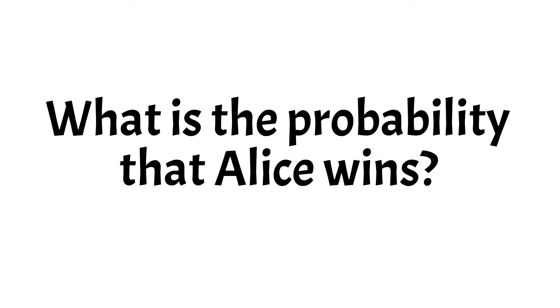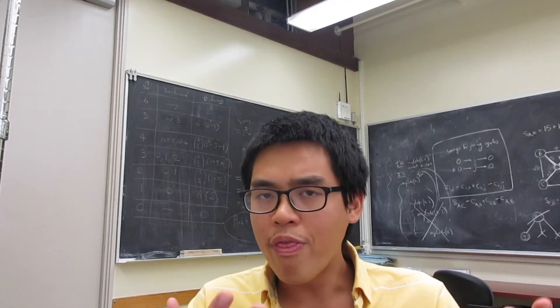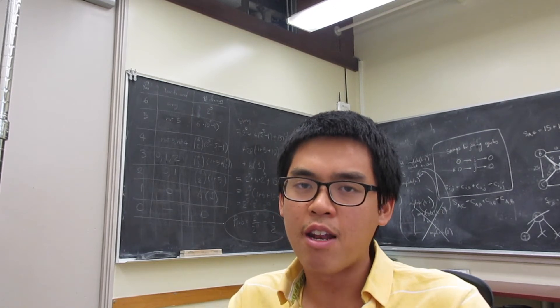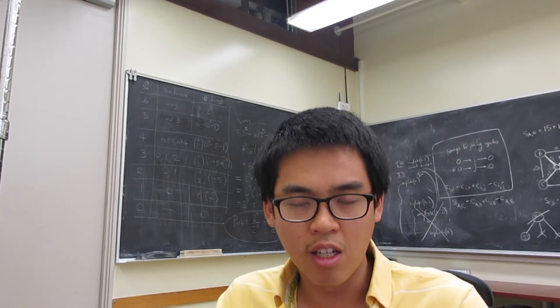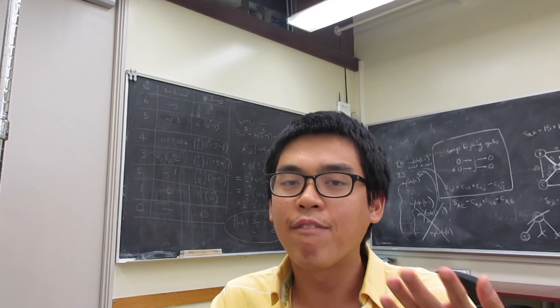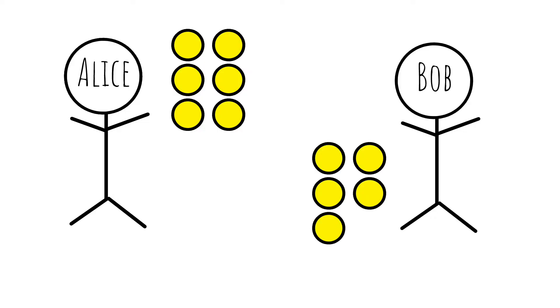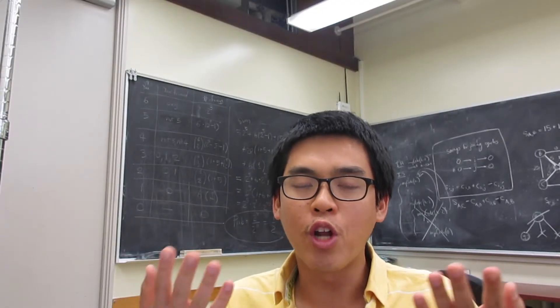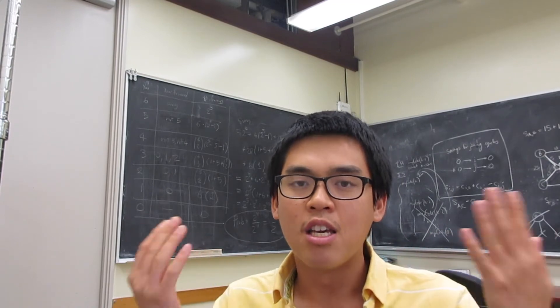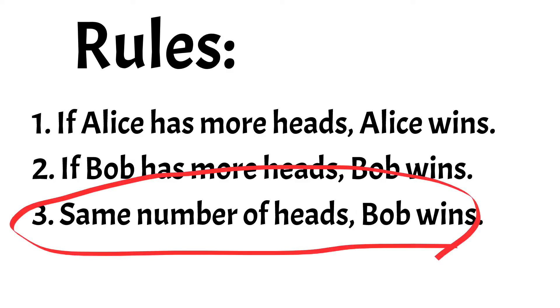What is the probability that Alice wins this game? So one thing that makes this problem very interesting is that the problem is very not symmetric. Two players have different number of coins. Alice has 6 while Bob has 5. But the rule also not symmetric. Because if they have the same number of coins, Bob wins.